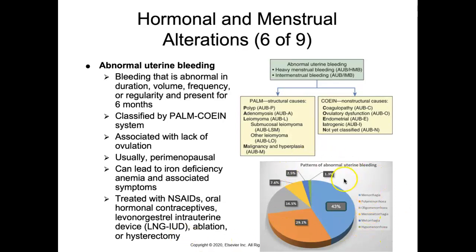Reviewing patterns of abnormal uterine bleeding: menorrhagia is heavy menstrual bleeding and can lead to anemia. Polymenorrhea is frequent menstruation with cycles less than 21 days. Oligomenorrhea is infrequent menstrual bleeding caused by failure to ovulate due to endocrine or systemic disorders.